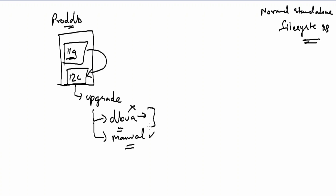In our case we will be using DBUA because we have two Oracle homes — the grid home and database home — and we have a data guard configuration, so it is very complex. If you go with the manual method there are so many steps that you might get confused. So I'm going with DBUA to simplify the upgrade process. This is how upgrades happen in a normal standalone database.